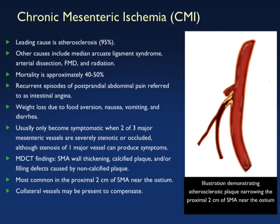Patients with chronic ischemia usually have atherosclerosis, though causes also include compression by the median arcuate ligament on the celiac, dissection, fibromuscular dysplasia, and radiation. With chronic ischemia, patients often have multiple comorbidities, so there is a high mortality rate. They typically present with recurrent postprandial abdominal pain, weight loss due to food aversion, nausea and vomiting, and diarrhea. Usually chronic mesenteric ischemia only becomes symptomatic when two of the major three vessels are severely stenotic or occluded.